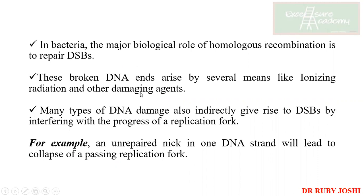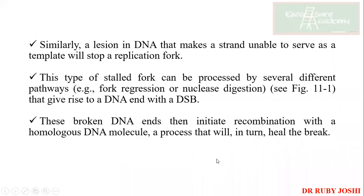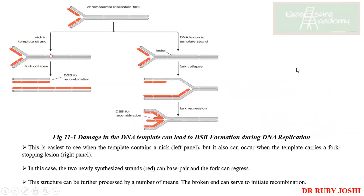In the case of bacteria, the major biological role of homologous recombination is to repair double-strand breaks. As we said before, DNA is getting broken because of several means like UV radiation and other damaging agents. An unrepaired nick can lead to collapse of the replication fork. So it is really important to understand why and how these double-strand breaks are affecting the cell. A lesion in DNA affecting one strand makes it unable to serve as a template for the replication fork.